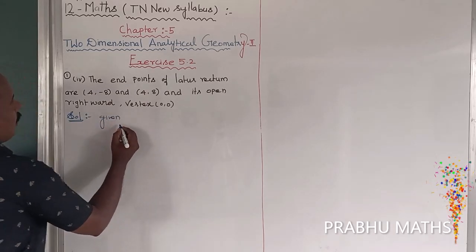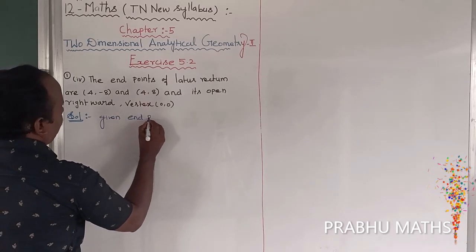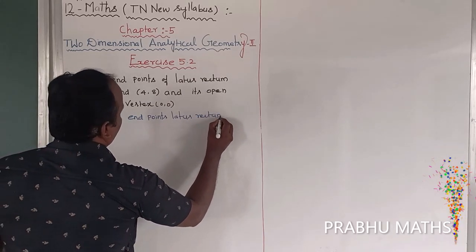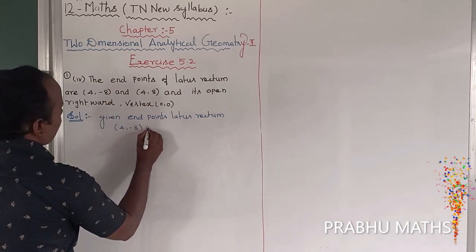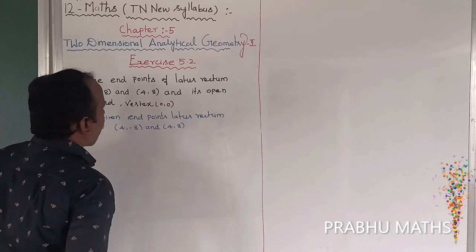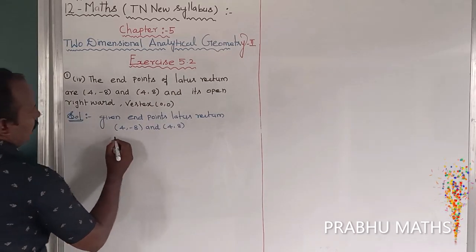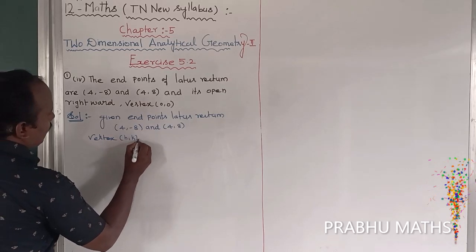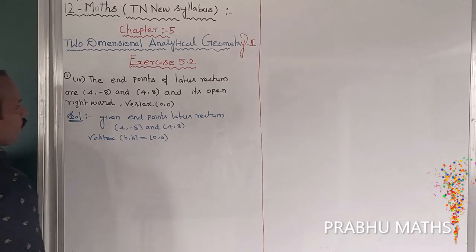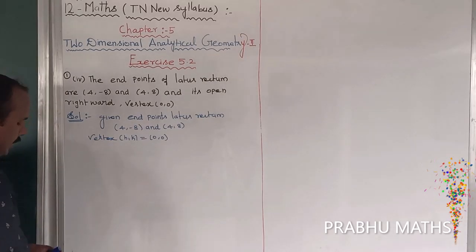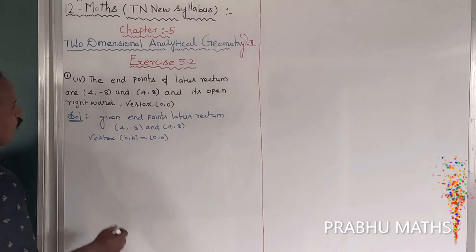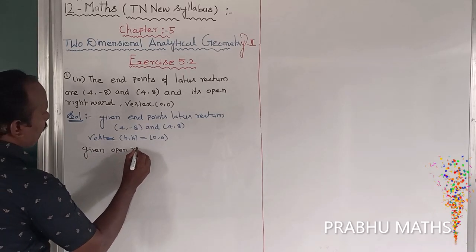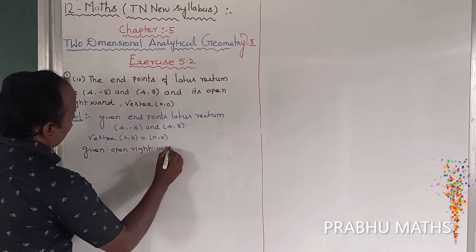Given information: the endpoints of the latus rectum are (4, -8) and (4, 8). The vertex (h, k) = (0, 0), and the parabola is open rightward. The general form of a right-side open parabola is (y - k)² = 4a(x - h).